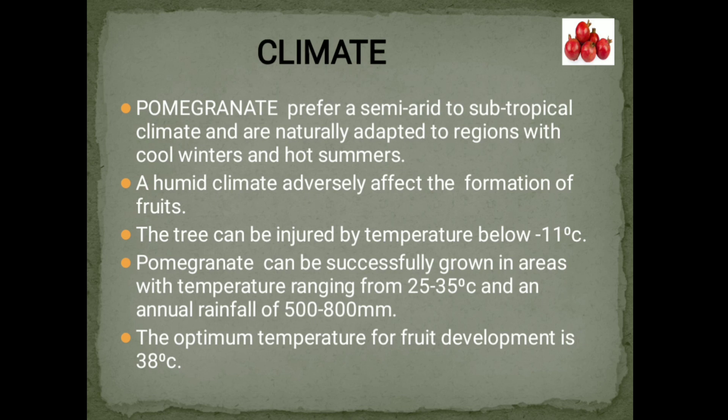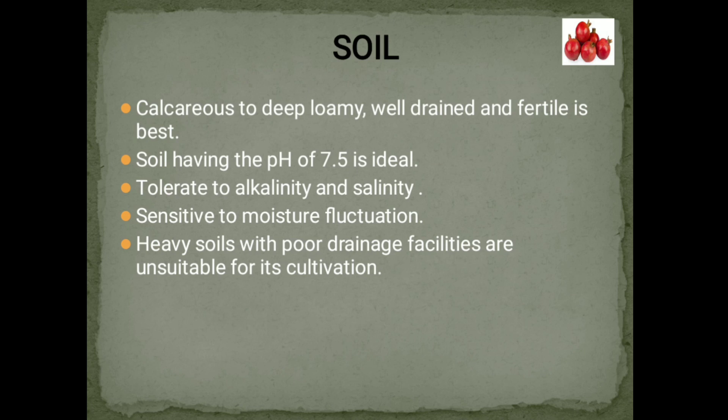Soil. Calcareous to deep loamy, well-drained, and fertile soil is best. Soil having pH 7.5 is ideal. Pomegranate is tolerant to alkalinity and salinity but sensitive to moisture fluctuation. Heavy soils with poor drainage are unsuitable for its cultivation.